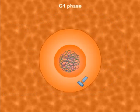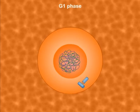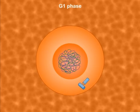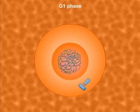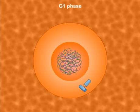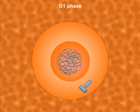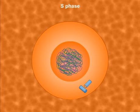During G1 phase, the cell is metabolically active and grows in size. During S phase, the replication or the synthesis of DNA takes place.